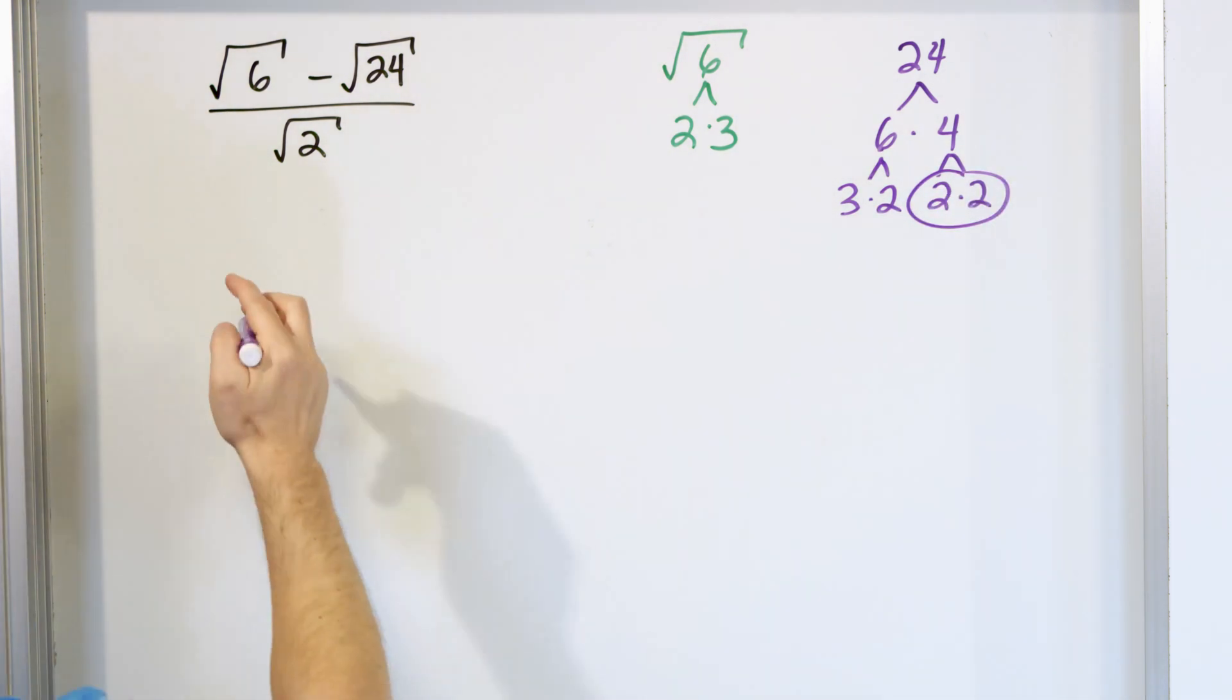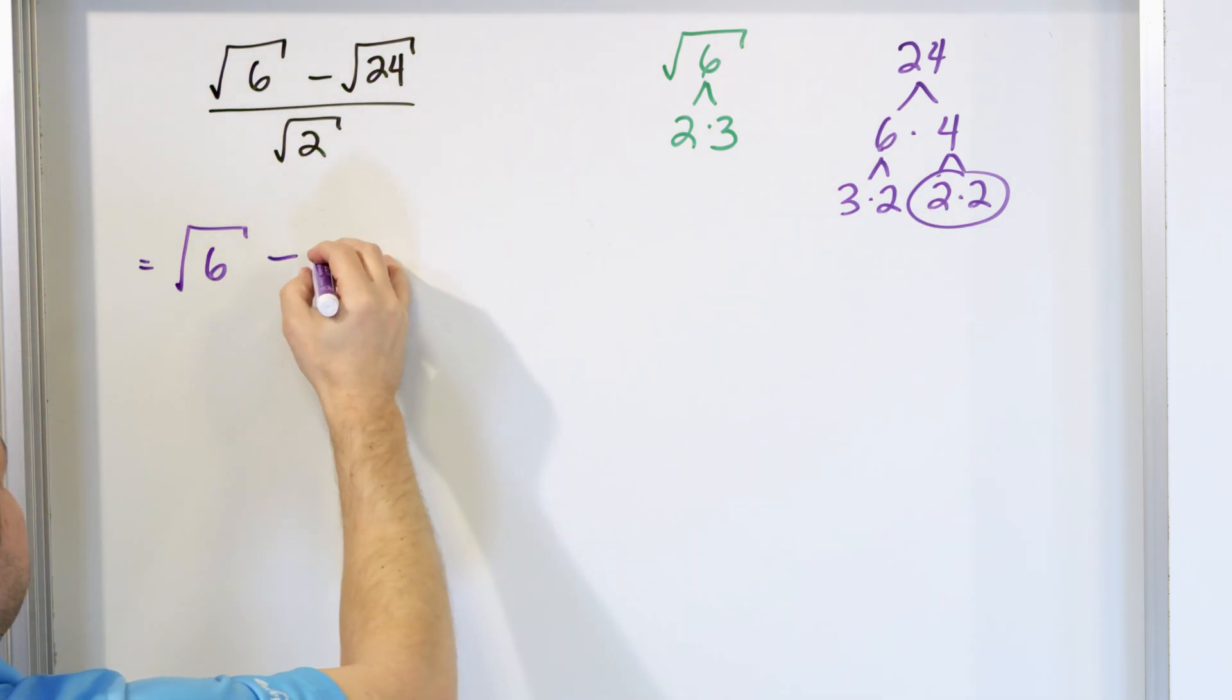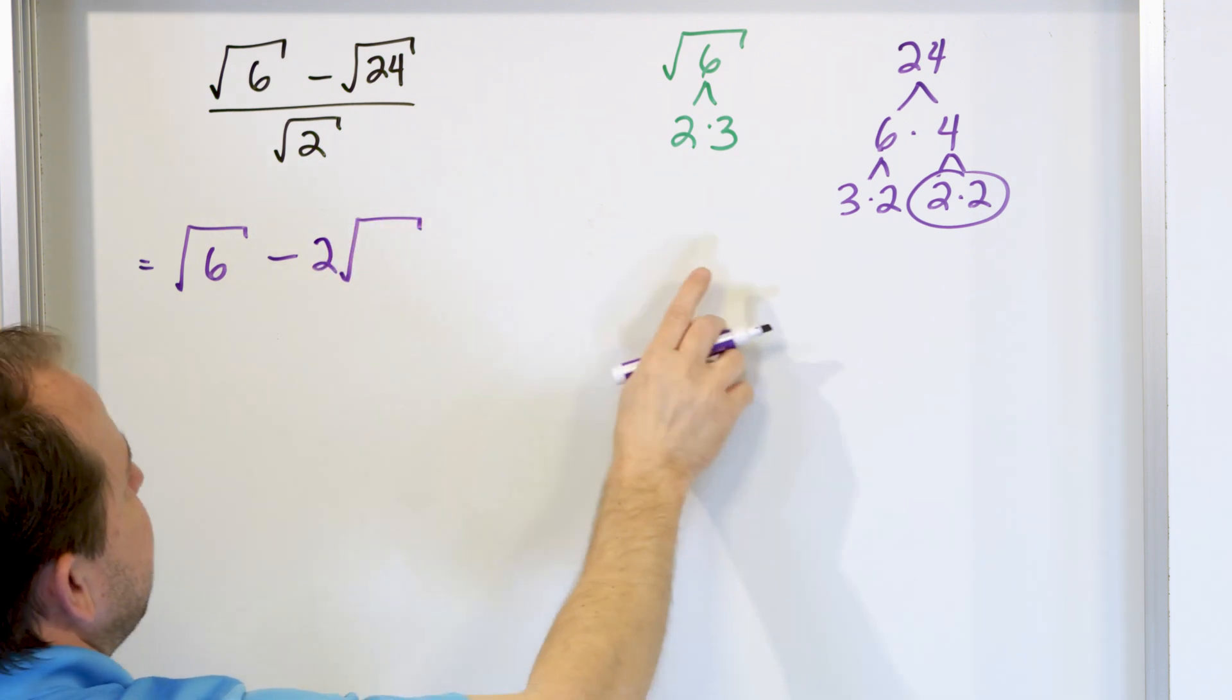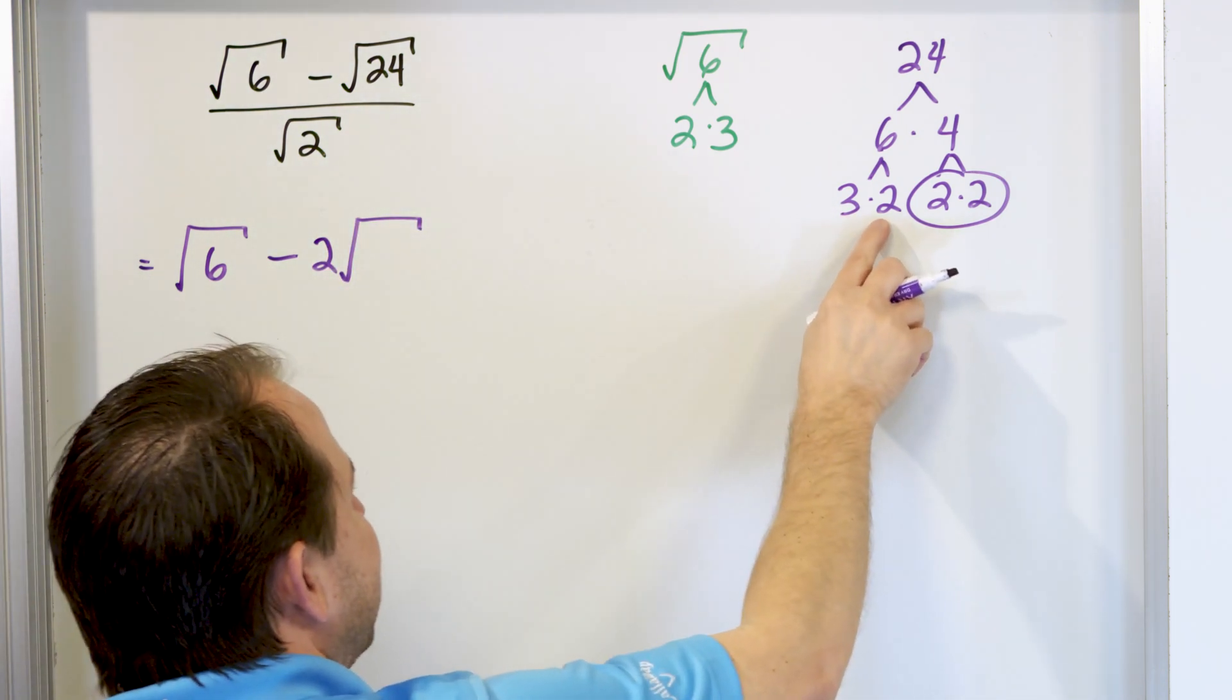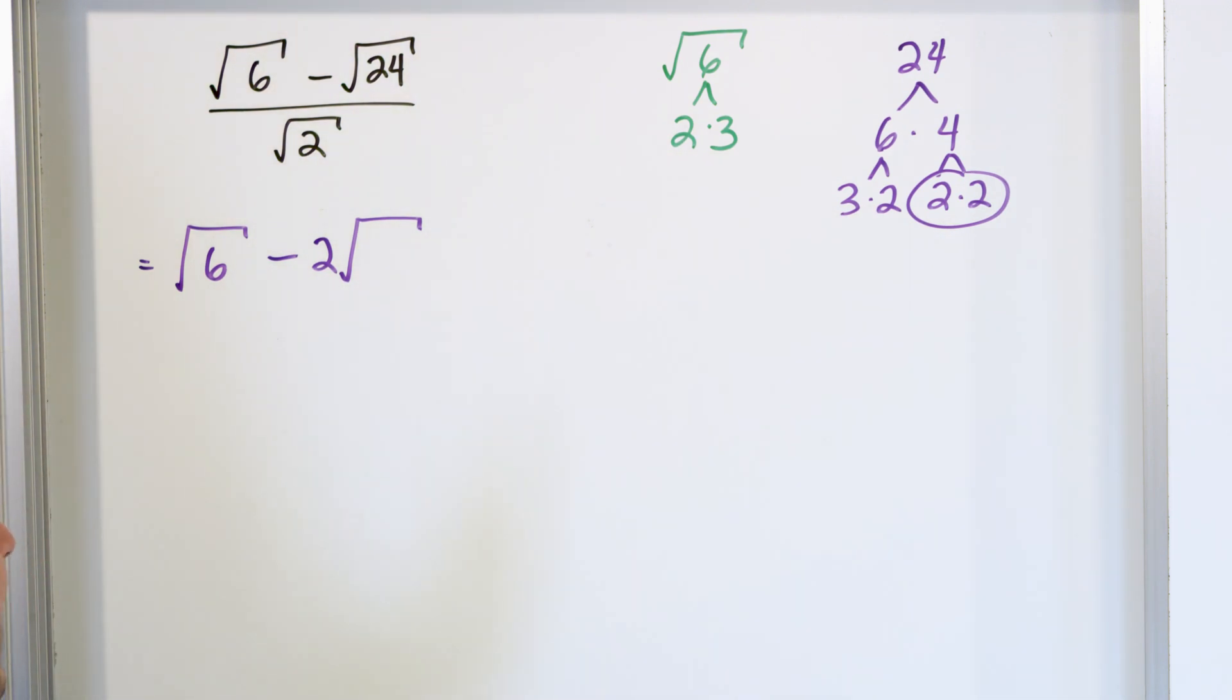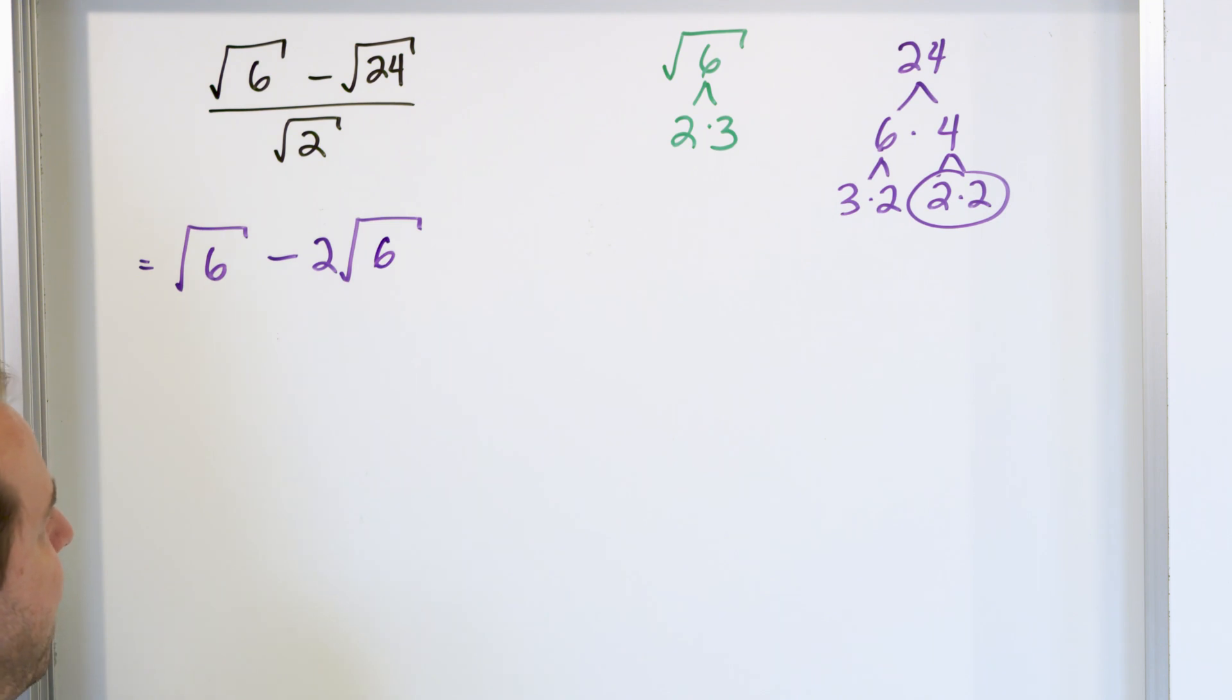So in the numerator here, the square root of 6 didn't simplify any more. So it's square root of 6 minus the square root of 24. I have a single 2 that comes out. And then underneath here, I have 3 times 2. So now you've got enough practice under your belt. You know that what is left over is 3 times 2, so it's going to be a 6 under that radical.